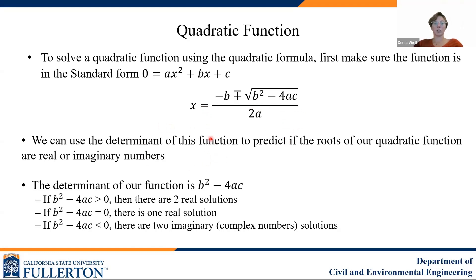We can use the determinant of this function to predict if the roots of x, or the solutions for x, are real or imaginary numbers. The determinant is b squared minus 4ac, that's what we call the determinant. If this value is positive or greater than zero, there are going to be two real solutions to x. If it equals zero, there is only one real solution, and if it is less than zero, there are two imaginary or complex solutions. So an imaginary number, remember, is when you have a square root of a negative number in here. So if this is negative, this becomes a square root of a negative number. And that means you will have two complex solutions as your roots.